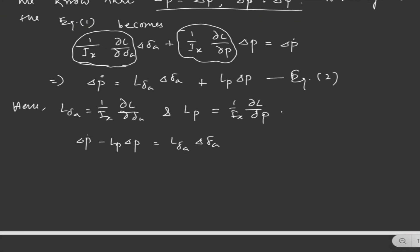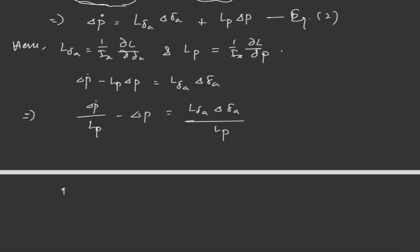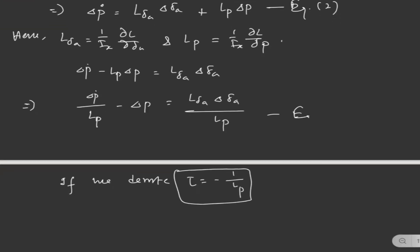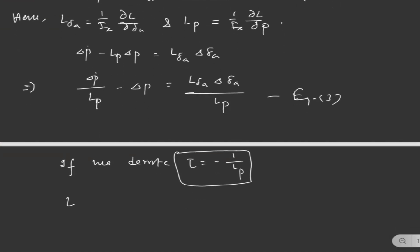Further we can write: ΔP_dot / L_P − ΔP = L_delta_A · delta_A / L_P. And if we denote tau, the time constant, equal to 1/(−L_P), and substituting this parameter into equation 3, we can write: tau · ΔP_dot + ΔP = L_delta_A · delta_A / L_P.